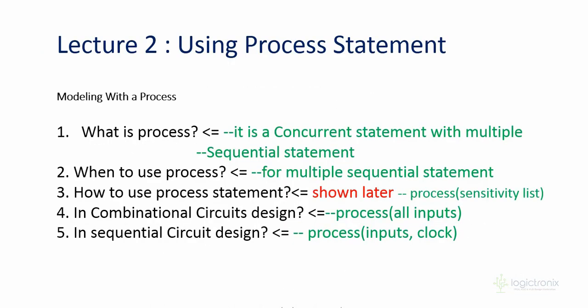While we need to use concurrent statements — meaning parallel statements — we need to know about process. Actually, process itself is a concurrent statement block. We can include multiple sequential statements inside a process. So in a single program there may be different processes, meaning different concurrent blocks. And inside each concurrent block there may be different sequential statements. Sequential statements execute one after another; concurrent statements execute in parallel. We use process for executing different sequential statements.